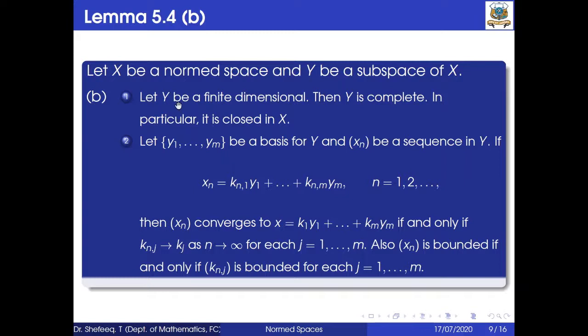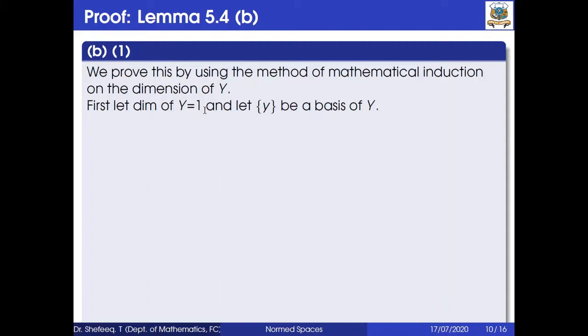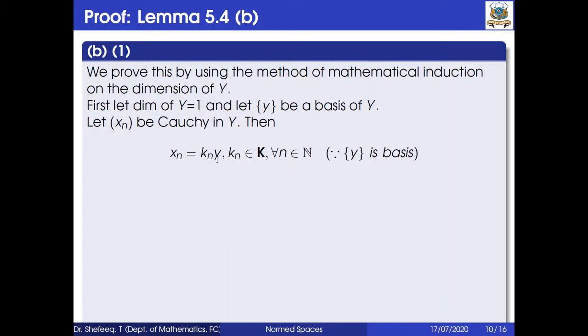Proof of the first sub-part: we prove by mathematical induction on the dimension of Y. First let dim(Y) = 1, and let {y} be a basis of Y. We want to prove Y is complete. Take a Cauchy sequence in Y: let xₙ be Cauchy in Y, so xₙ = kₙy where kₙ ∈ 𝕂 for all n. Then ‖xₙ − xₚ‖ = ‖kₙy − kₚy‖ = |kₙ − kₚ| · ‖y‖.